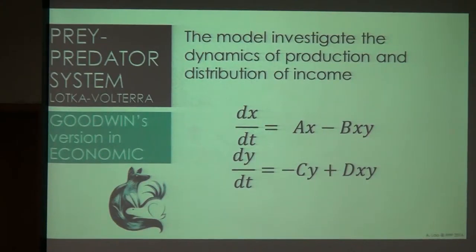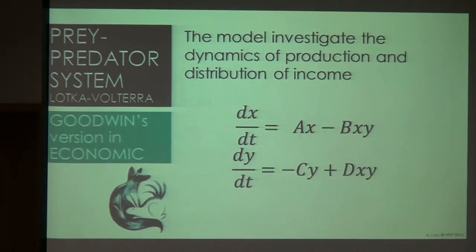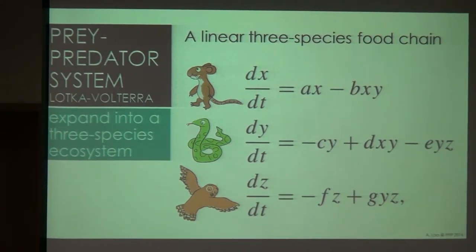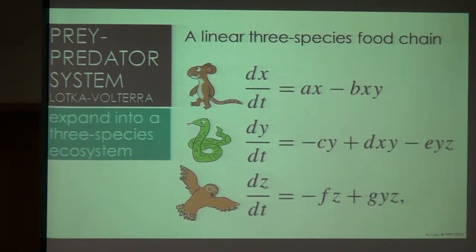The Lotka-Volterra equation has a long history of use in economics. This was first initiated by Richard Goodwin in 1965. What Goodwin did is use exactly the same model proposed by Lotka and Volterra, but assigned different notations: X here denotes the level of employment and Y denotes the share of wages of national income. Basically, this model investigated the dynamics of production and distribution of income. If you're bored with two equations, you can extend it to more species — for example, rat, snake, and owl — giving you a three-species food chain, which can also be applied in economics.